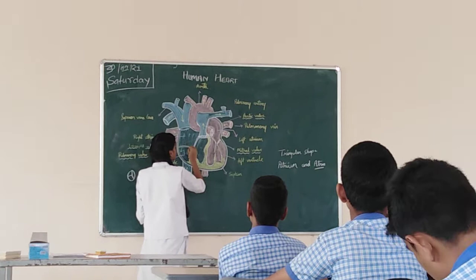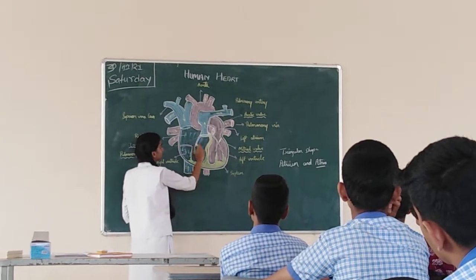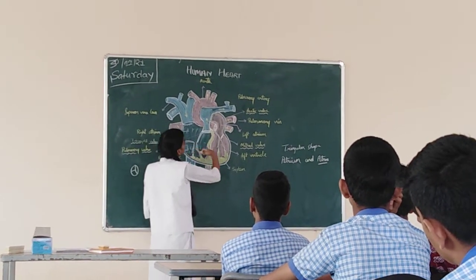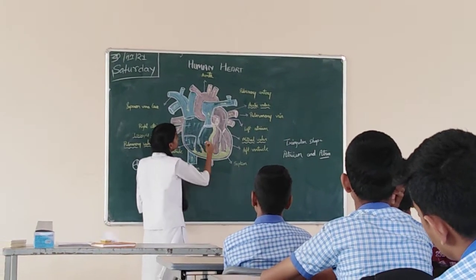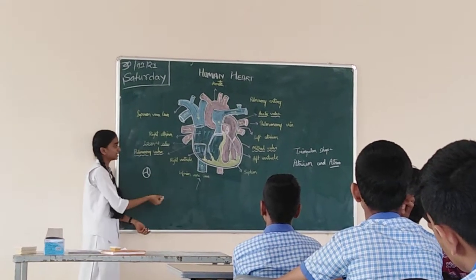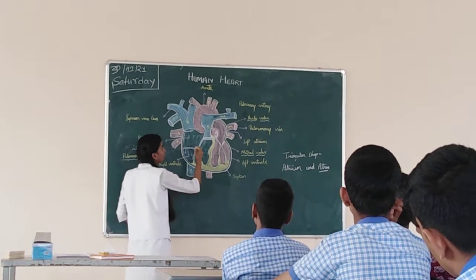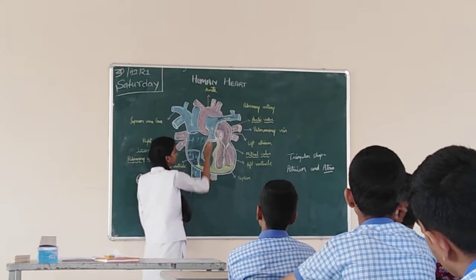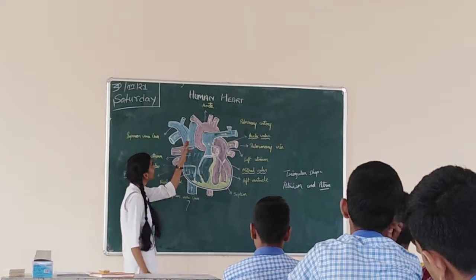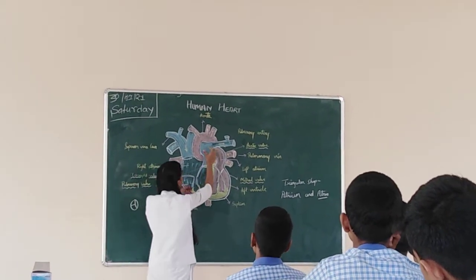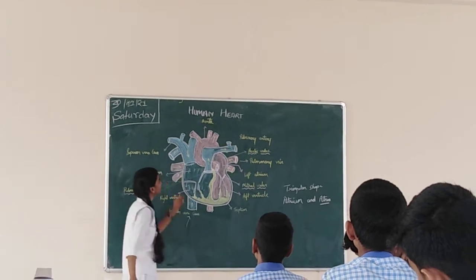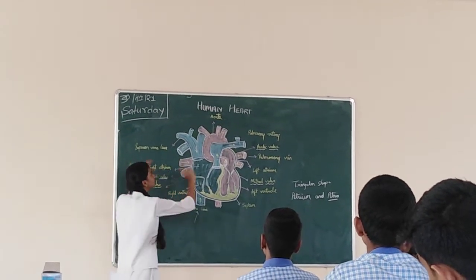From the right ventricle, the blood crosses the pulmonary valve and goes through the pulmonary artery. The pulmonary valve stops the blood from flowing back. The blood then goes to the pulmonary artery, which has a right branch and a left branch, and the deoxygenated blood goes through the lungs.